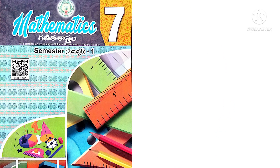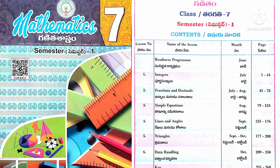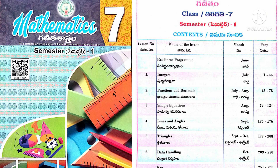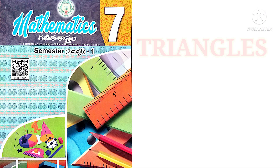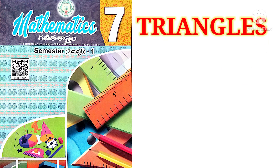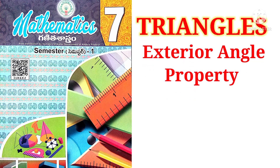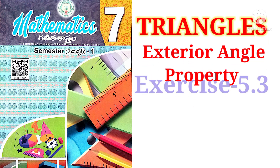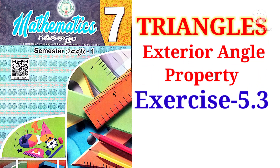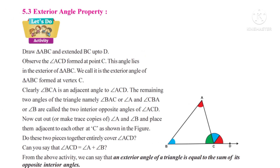Welcome to Shaker Maths. Today we are going to learn 7th Class Mathematics Semester 1, 5th Chapter, Triangles, Exterior Angle Property, Exercise 5.3. Exterior Angle Property of a Triangle.